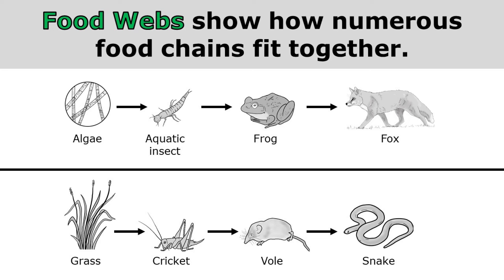Food webs show how numerous food chains fit together. Here I have two food chains. The first shows how energy is transferred from algae to the aquatic insect to a frog to a fox. The second shows how energy is transferred from grass to a cricket to a vole to the snake.